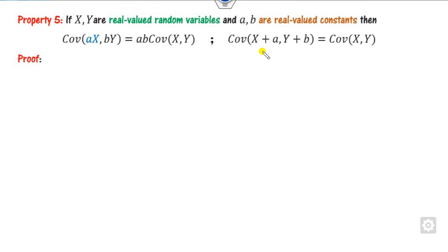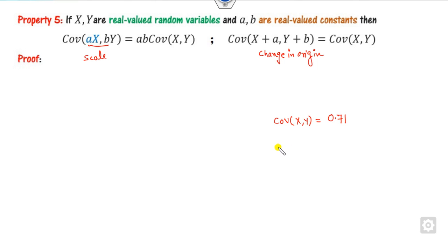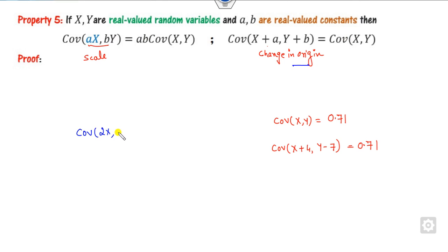The fifth property concerns change of origin and scale. Change of origin means adding a constant, and change of scale means multiplying by a constant. For example, if Cov(x, y) = 0.71, then Cov(x+4, y−7) is again 0.71 — changing the origin does not affect the covariance. Similarly, Cov(2x, 3y) = 2×3×0.71, since multiplying by constants scales the covariance.